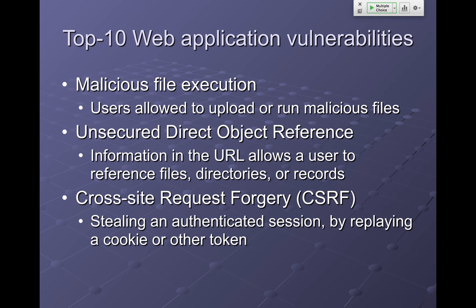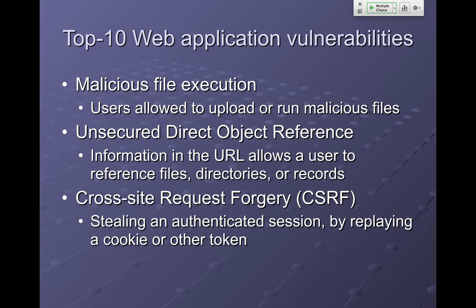Cross-site request forgery is where you trick a request into taking effect at another site. You can put a link or even an image tag on your page which causes someone's browser to go to another site and do something — like the Security Shepherd project where an image tag causes the administrator when they read an email to go to another page and elevate you to administrator. You can make people go to another page and buy your book on Amazon or post something on Facebook. A similar version is to steal a cookie and reuse it on another machine.